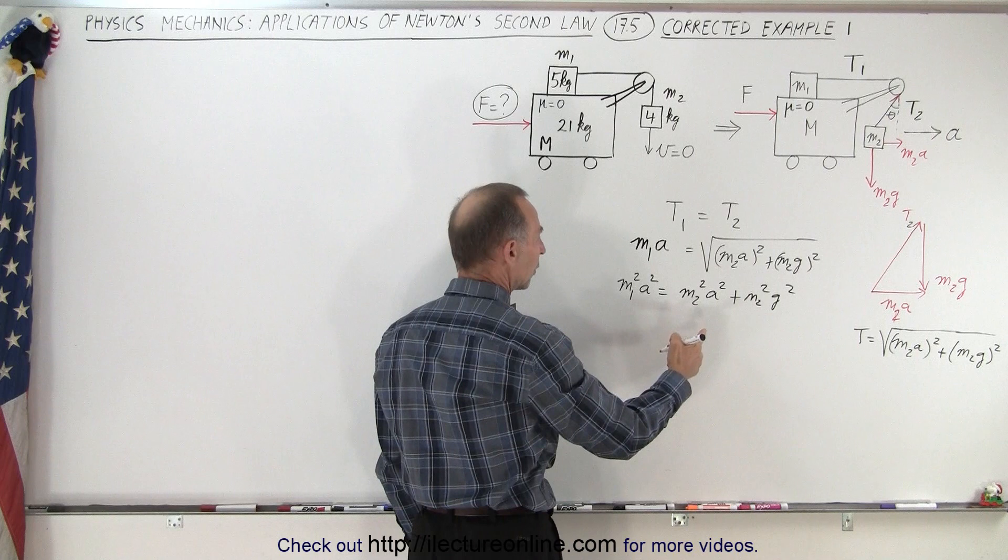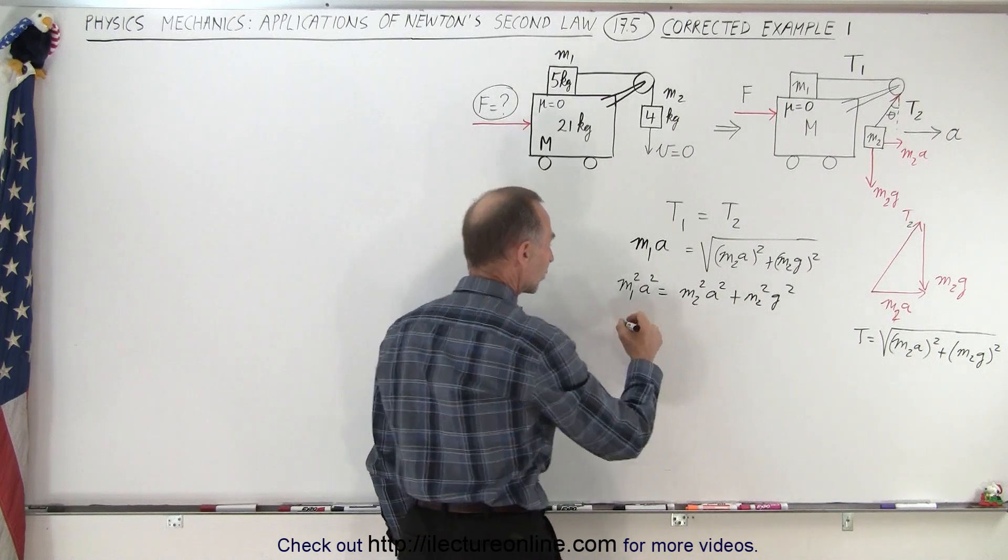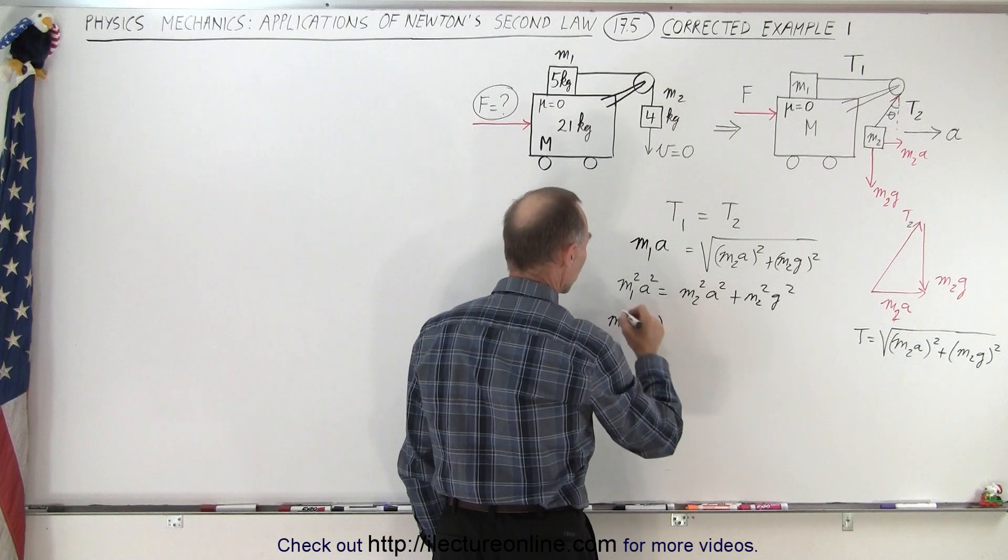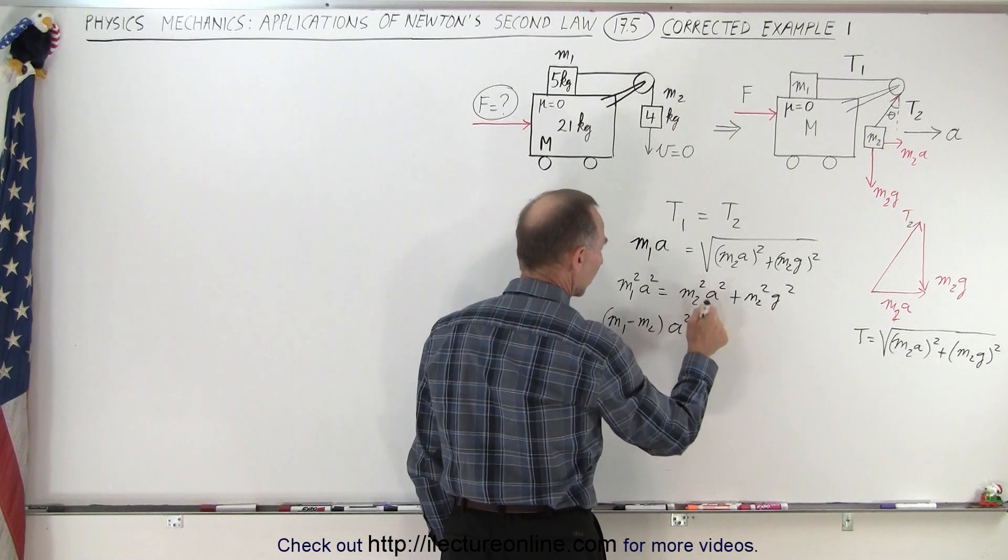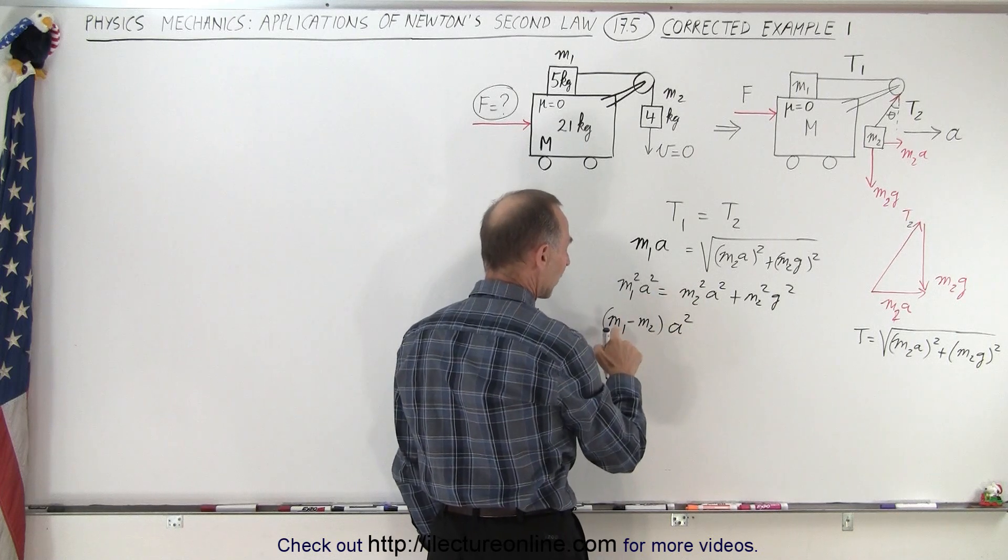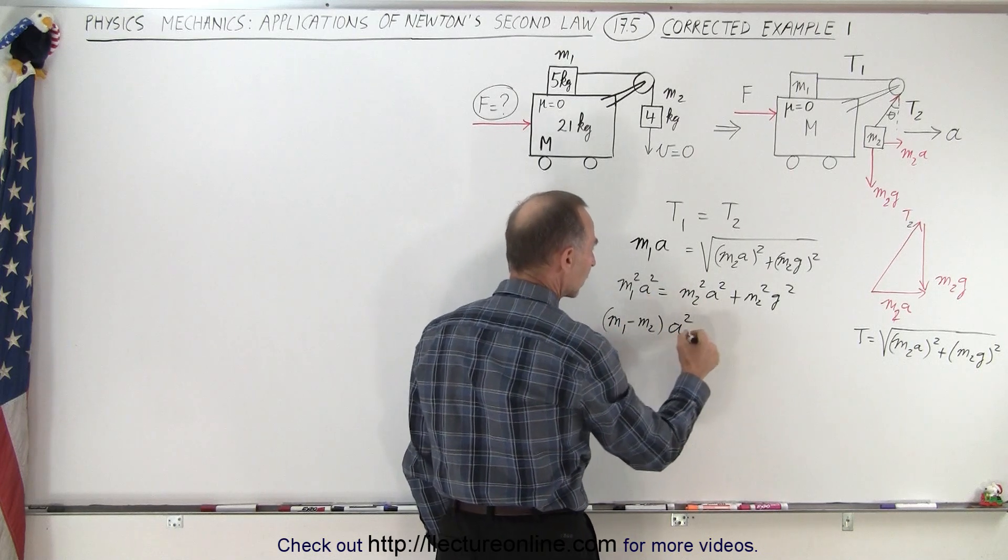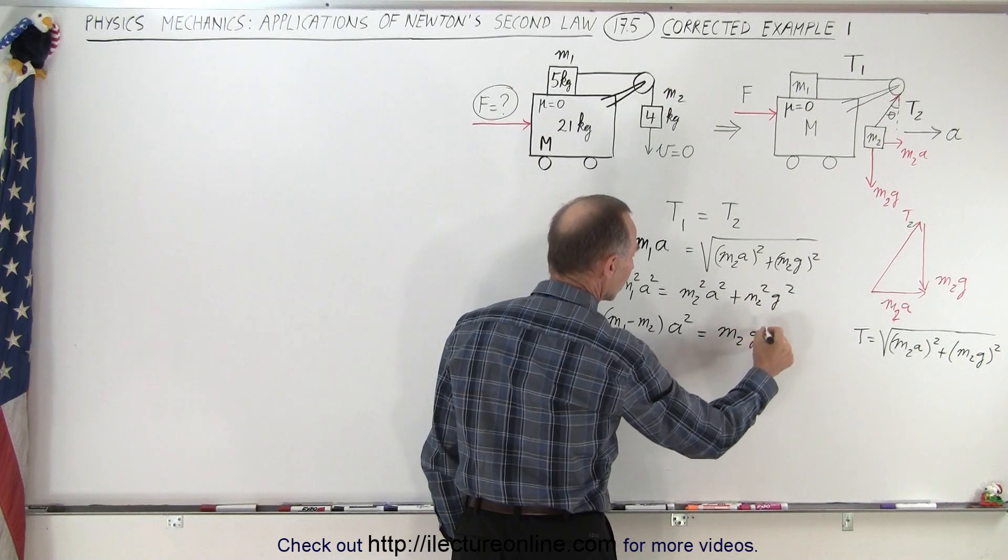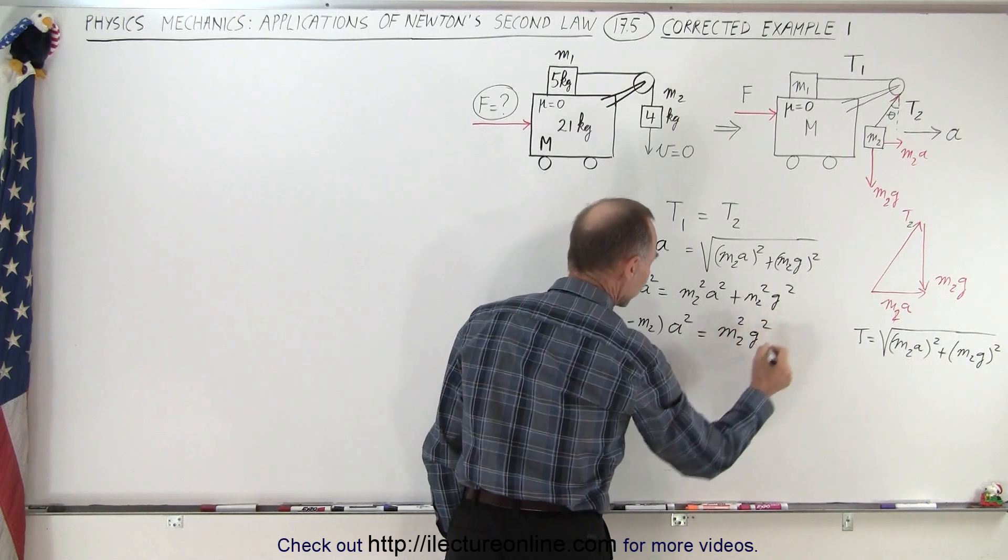We can then go ahead and move that to the other side. So now we have (m1 squared minus m2 squared) times a squared. We move this to the other side, this becomes a negative, and so here we have (m1 squared minus m2 squared) a squared, and that is equal to m2 squared g squared.